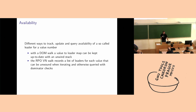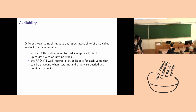The partial redundancy elimination path uses bitmaps of values available for each basic block for its dataflow problem, which basically requires quadratic memory, because every value available in a block that dominates any other block is also available in the later block.